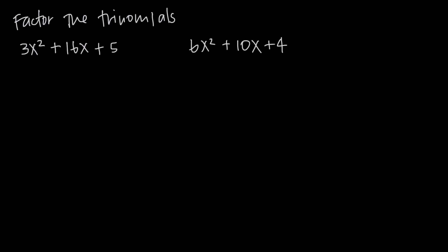We've already talked about factoring trinomials, which are polynomials that include three terms. Tri means three, so trinomial means a polynomial with three terms. We've already talked about how to factor something like this, but only when there's no coefficient on the x squared term. The coefficient is the value that sits right in front of the x squared or the x variable. We haven't dealt with trinomials where we have a coefficient on our x squared term other than 1.